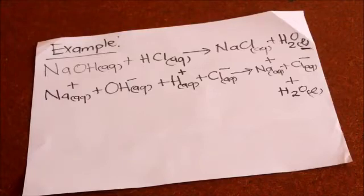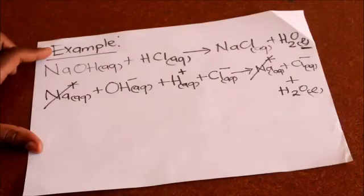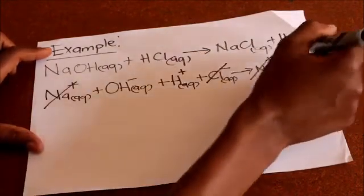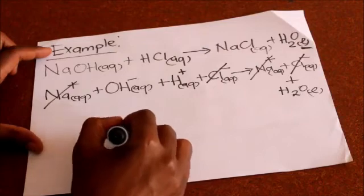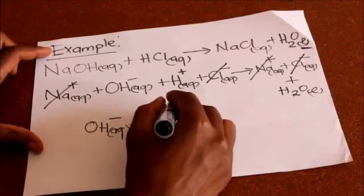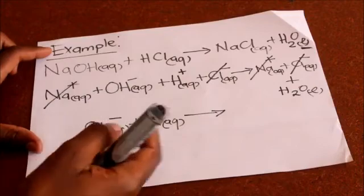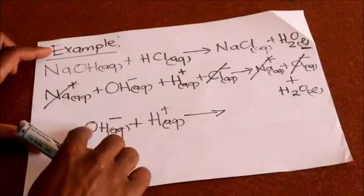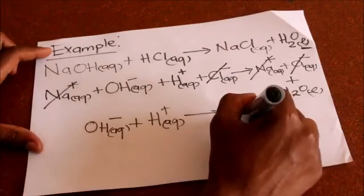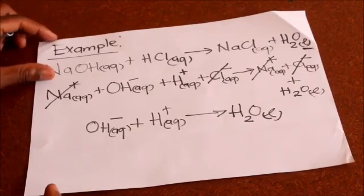Those ions which appear on both sides of the equation should be cancelled out. We have Na⁺ on both sides — cancel it. We have Cl⁻ on both sides — cancel it. Then we write the remaining ions: OH⁻(aq) plus H⁺(aq). You can see that OH⁻ combined with H⁺ gives two hydrogens and one oxygen, which forms water. So we write H₂O(l). That is how we write the ionic equation.